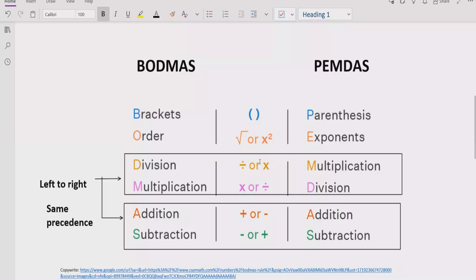Step number three: you have to solve division and multiplication. You have to go left to right in your expression and find out division and multiplication. Both have similar precedence, so you can solve any of them which is coming first.